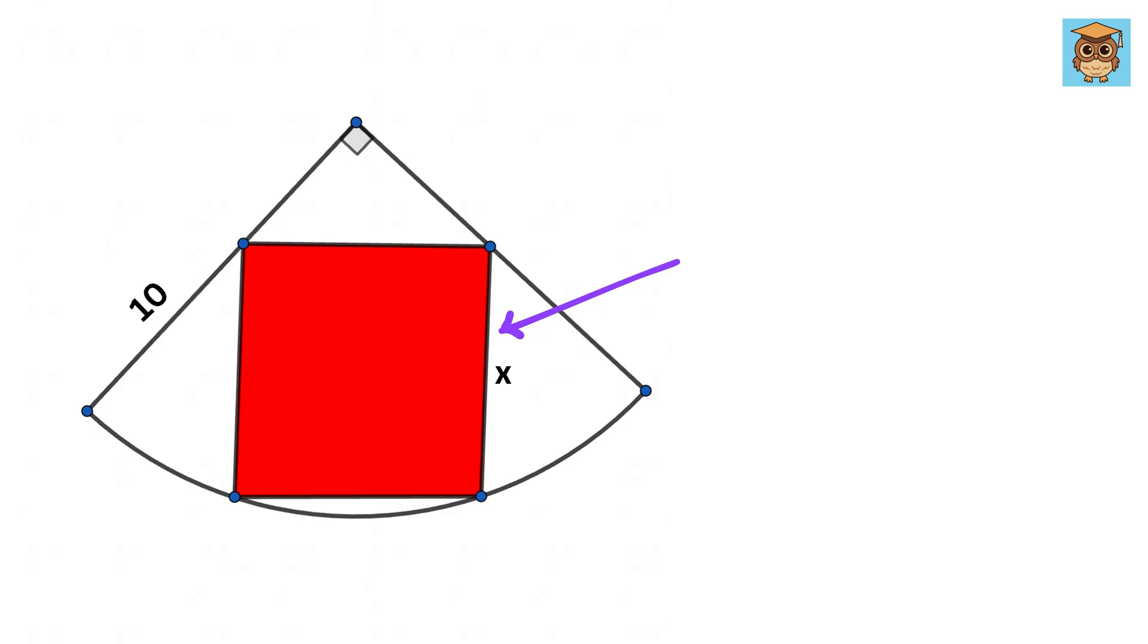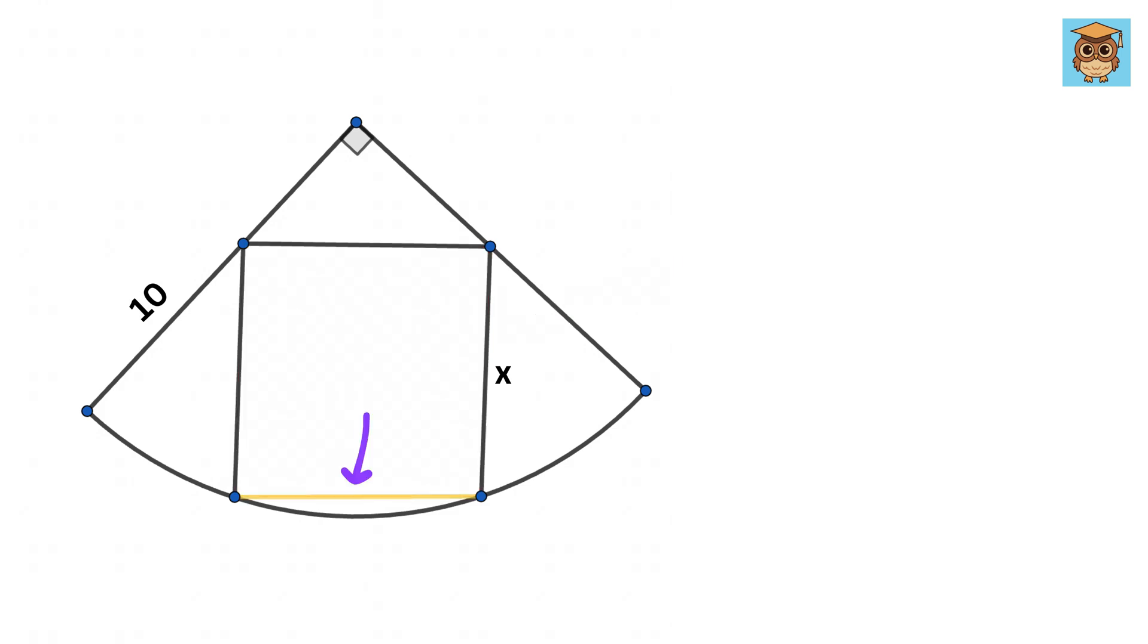Let us label the side of this square as X. If you see this line of the square, it also represents the chord of the quarter circle. So we can use a perpendicular bisector, which will divide this chord into two equal parts.